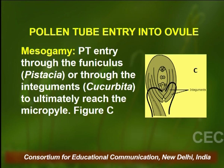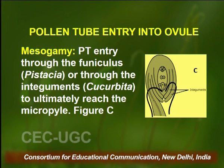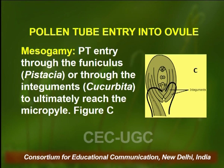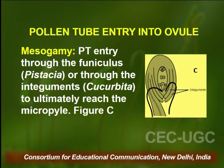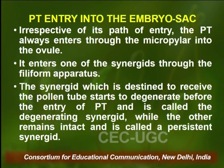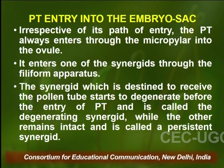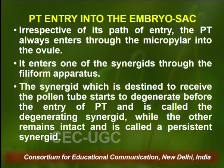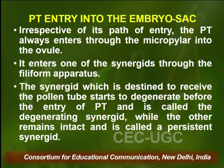Mesogamy is the entry of the pollen tube through the funiculus, as seen in Pistacia, and sometimes it can even enter through the integuments, as seen in Cucurbita. But ultimately, irrespective of its path of entry, the pollen tube always enters through the micropyle into the ovule.